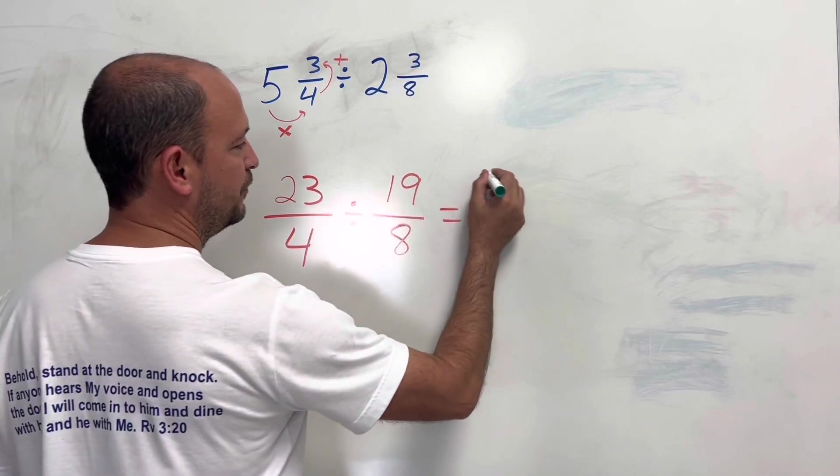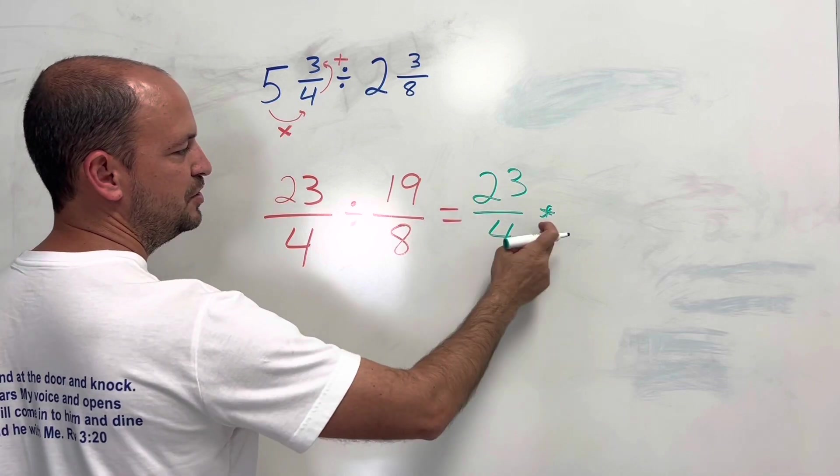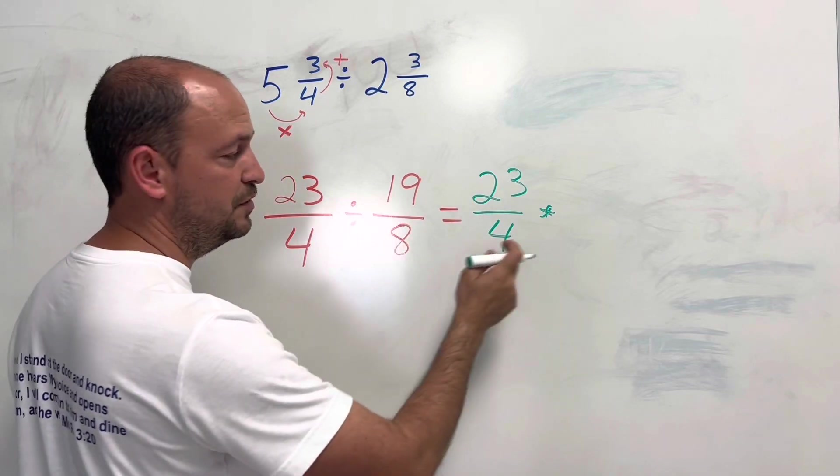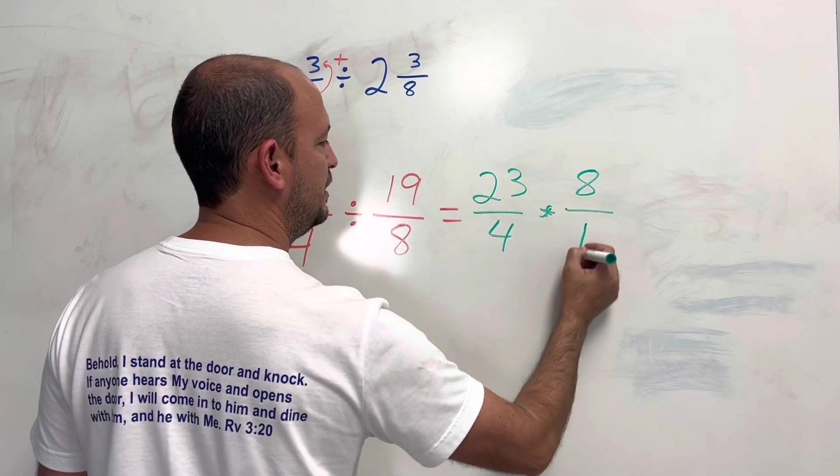So 23 over 4 times, so it's the keep, change, change, because you change division by multiplication, and you flip the second one. 8 divided by 19.